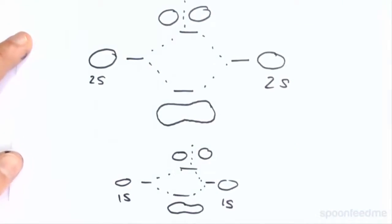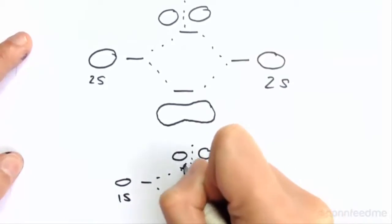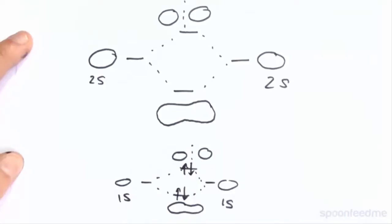So we'll have our first 4 electrons go into the molecular orbitals that come from the combination of the 1s orbitals as previously done. Our first 4 electrons go in here. However, here we have a slight difference.